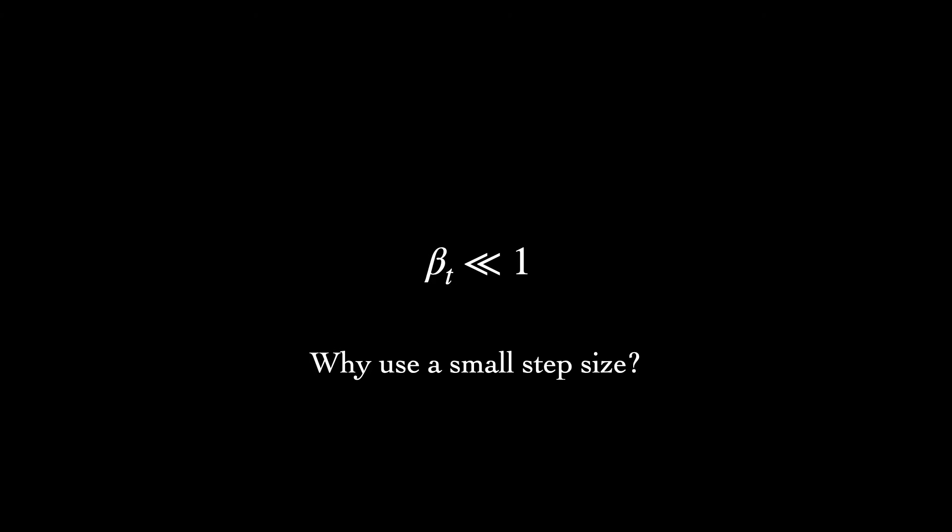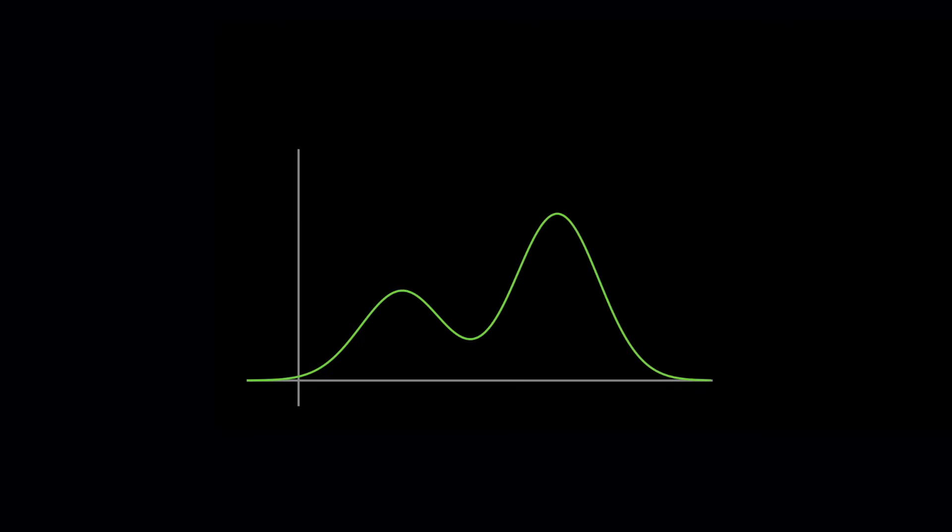Let's consider a simple case in one dimension. Suppose we were given the distribution of a forward process sample at time T-1, and it resembled a mixture of Gaussians with two modes. We then observe xt, and want to infer the posterior distribution over xt-1. That is, we'd like to determine where did the chain likely come from in order to arrive at xt? What was the previous step of the chain?